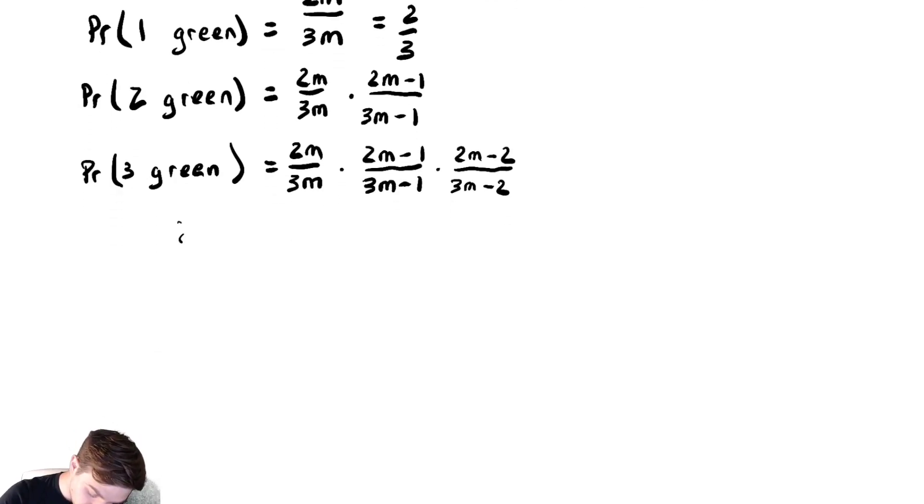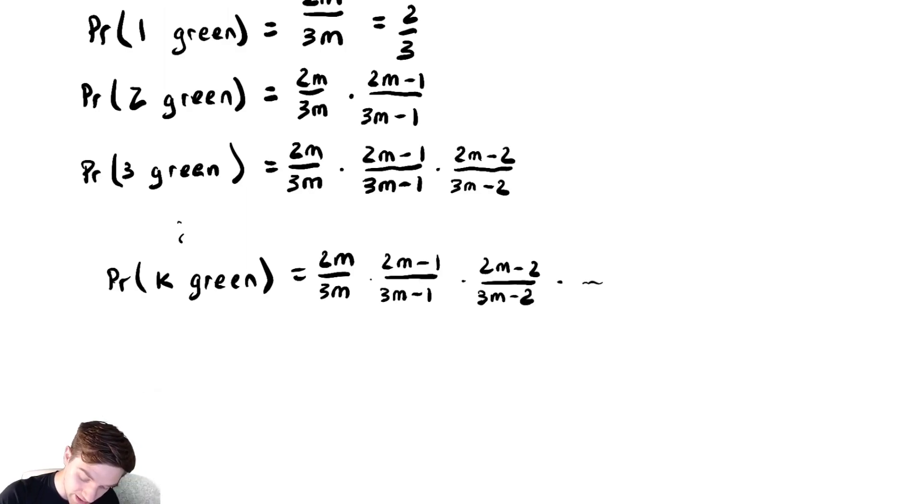Continuing this, what is the probability that we get k green balls? Well, that's going to be 2m over 3m times 2m minus 1 over 3m minus 1 times 2m minus 2, all the way down until we need to be careful here. When we pulled out three green balls, we had minus 2 as our last term, so this is going to be 2m minus k plus 1 over 3m minus k plus 1.